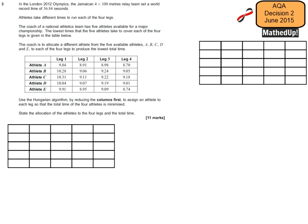In the London 2012 Olympics, the Jamaican 4x100m relay team set a world record time of 36.84 seconds. Athletes take different times to run each of the four legs.